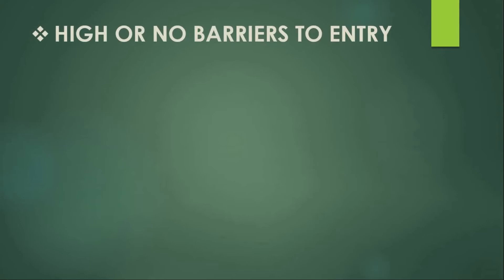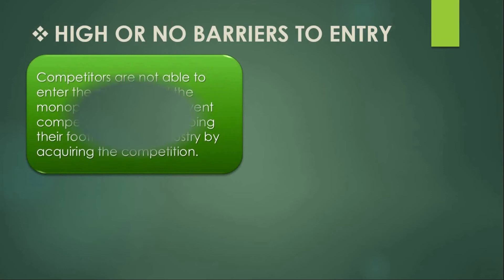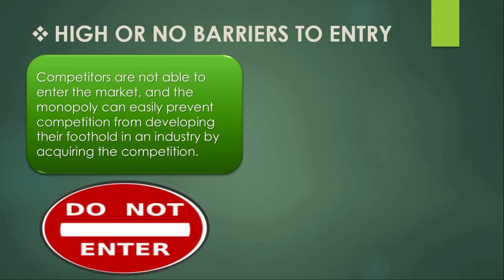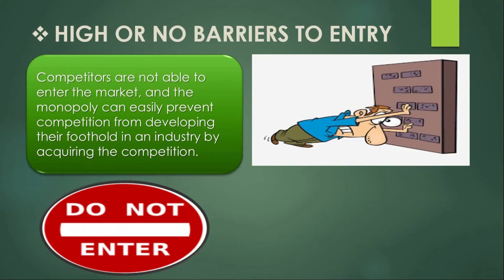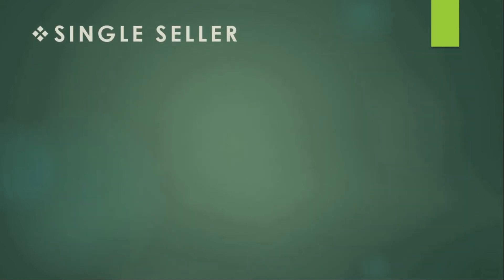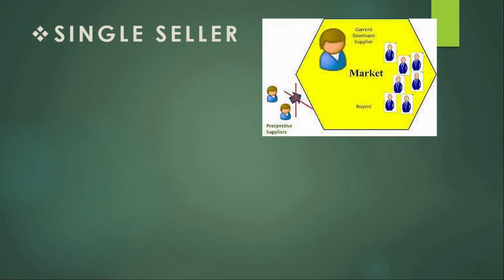The first characteristic is high barriers to entry — or no barriers to entry for the monopolist. Remember, in a perfectly competitive market there is free entry and exit. In the case of monopoly, there is only one firm producing the commodity. No other firms produce the same commodity, hence there is no distinction between the firm and the industry in monopoly.